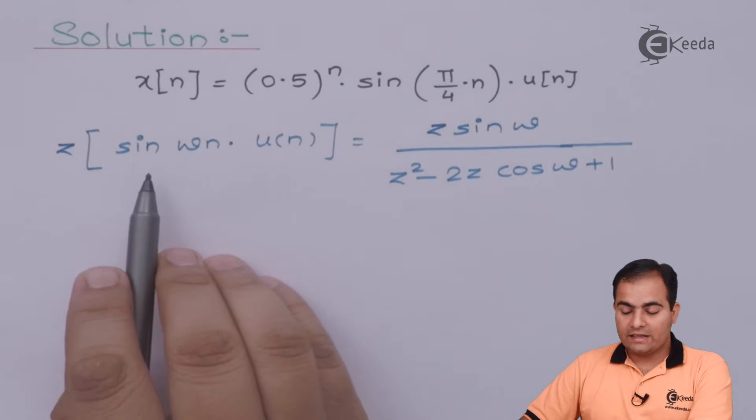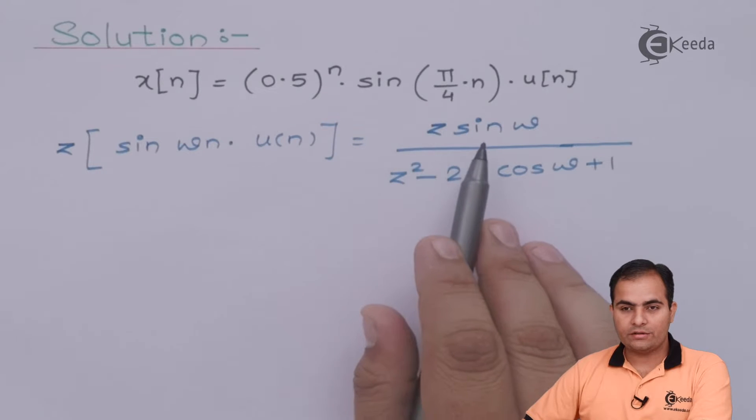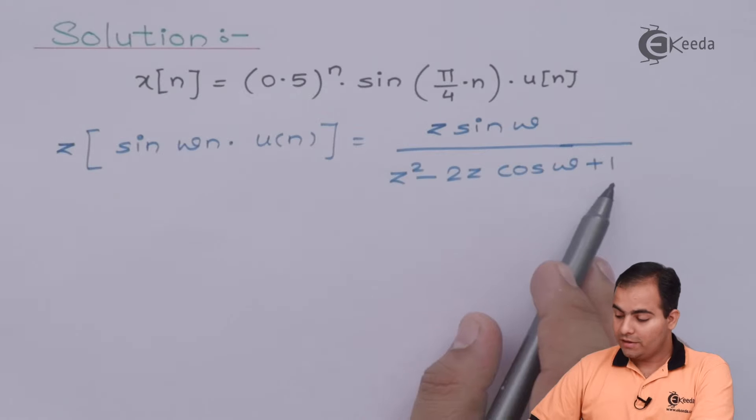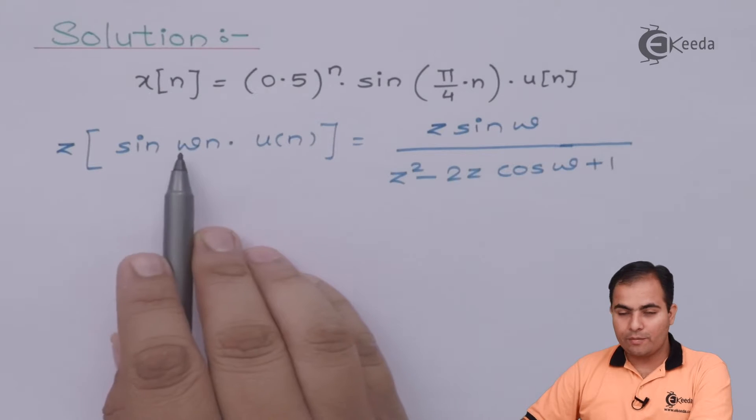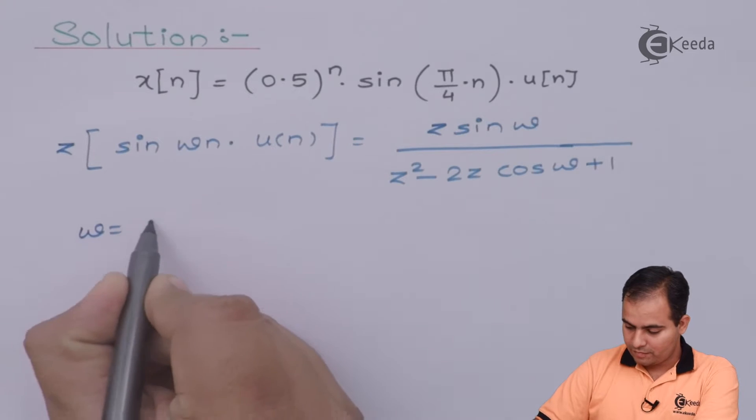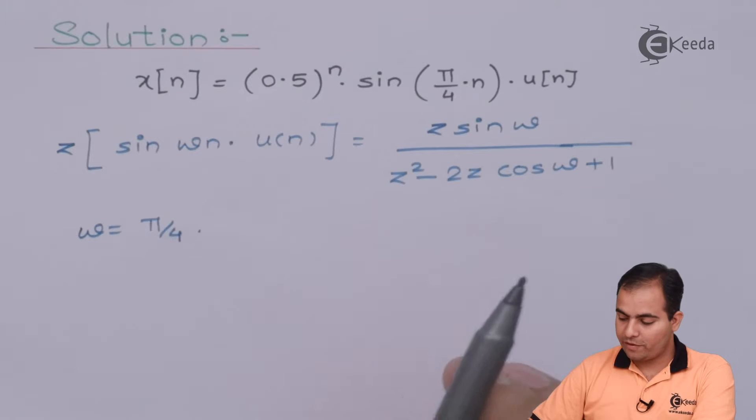This is the Z-transform of sin(ω·n)·u(n) and it is Z·sin(ω) / (Z² - 2Z·cos(ω) + 1). Now what is our omega? Just compare both these parts then you can say that here omega value is π/4. So just replace all this omega by π/4.